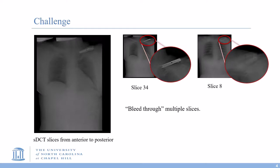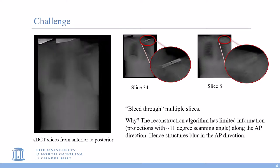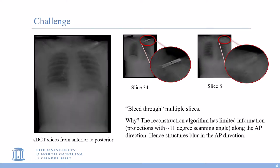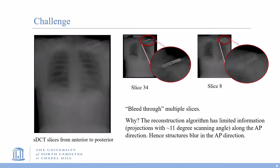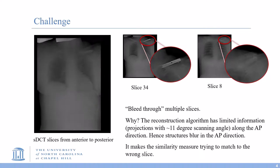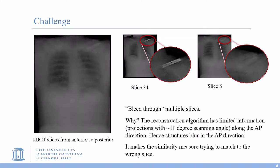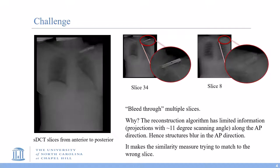This effect is caused by the limited angle of projections available. The reconstruction algorithm does not have enough information along the AP direction, thus the structures blur in this direction. This effect makes the similarity measure unreliable because it might try to register to the wrong slices.